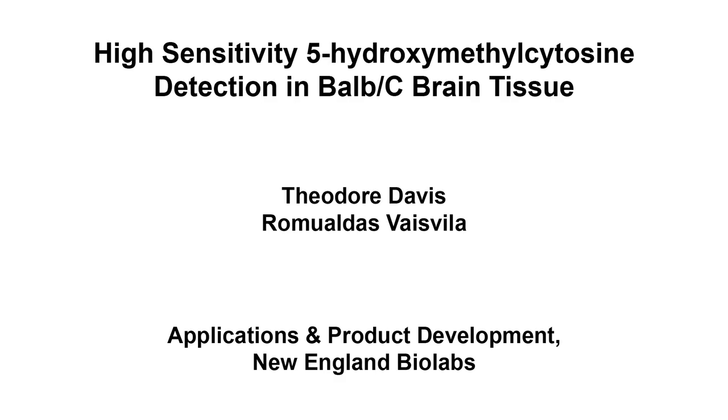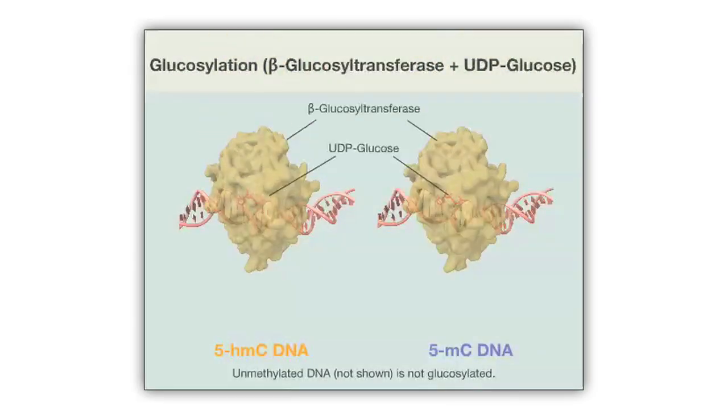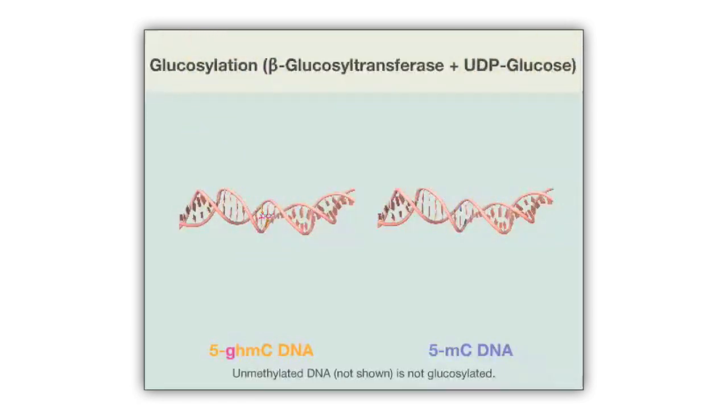The overall goal of the following experiment is to analyze and quantitate 5-methylcytosine and 5-hydroxymethylcytosine within a specific locus of genomic DNA. This is achieved by glucosylating the hydroxyl group of 5-hydroxymethylcytosine, which converts a cleavable MSP1 site into a non-cleavable site.